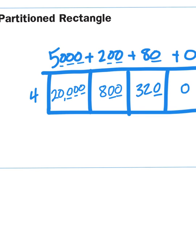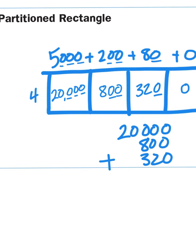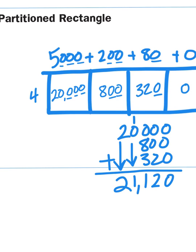So down below my rectangle, I'm going to set up an addition problem of 20,000, 800, 320, and zero. And then, since we know the zero is not going to give us anything, we're not even going to bother. So now I just have to add my place values. Zero plus zero plus zero, zero plus zero plus two, eight plus three gives me 11. So you've got to carry the one, bring that one down, as well as the 20 and the 20,000. So my total is now 21,120.